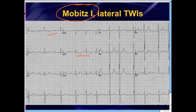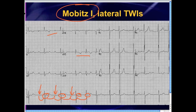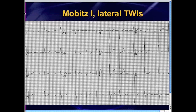There are also some lateral T-wave inversions suggesting ischemia laterally, but focusing on the rhythm, this is a Mobitz 1, also known as Wenckebach or second degree type 1 AV block. Three simple takeaways: whenever you see blips on the 12-lead EKG and you're debating whether those are real P-waves or artifact, just map it out with what you know for sure is a real P-wave. They map out nicely, confirming they are true P-waves. Then look at what the PR intervals are doing, and you'll easily determine whether it's Mobitz 1, Mobitz 2, or third degree heart block. Break it down, and these rhythms become very simple.